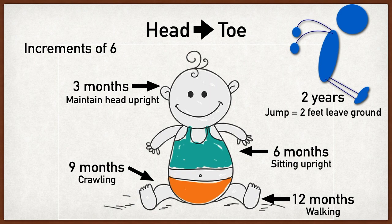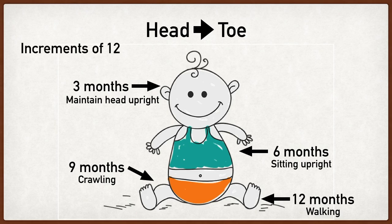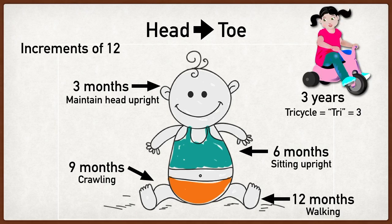We went by increments of six up to two years old. Now we're going to double that one more time and go by increments of 12. Starting at three years of age, this is when we start to ride tricycles. You're going to take the 'tri' on tricycle to help you remember three years old.